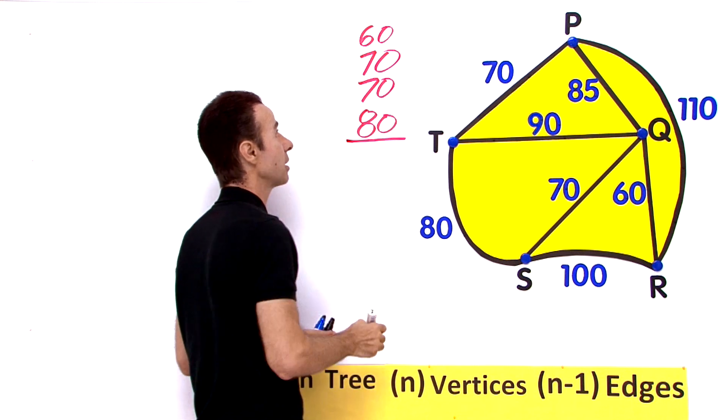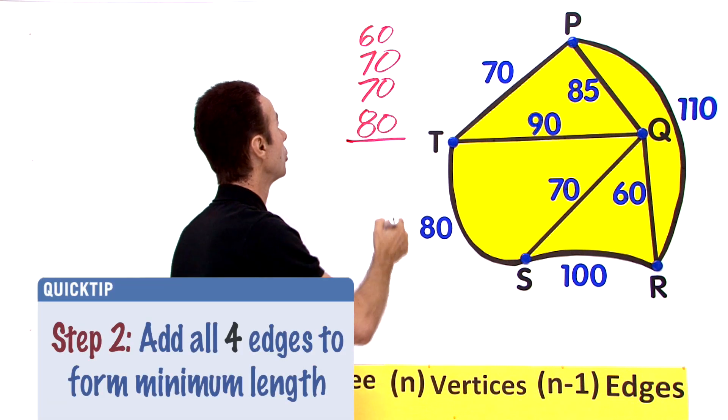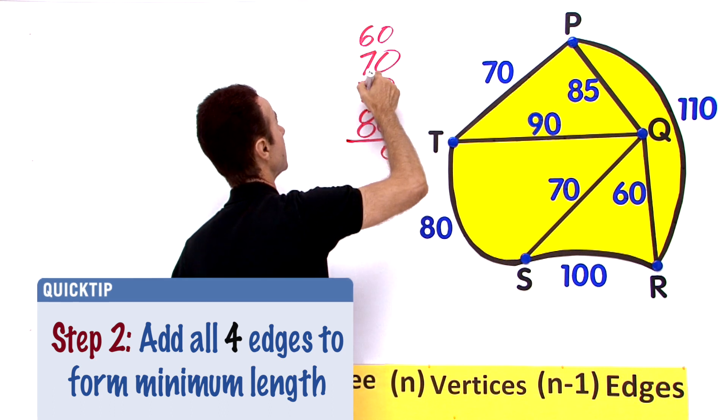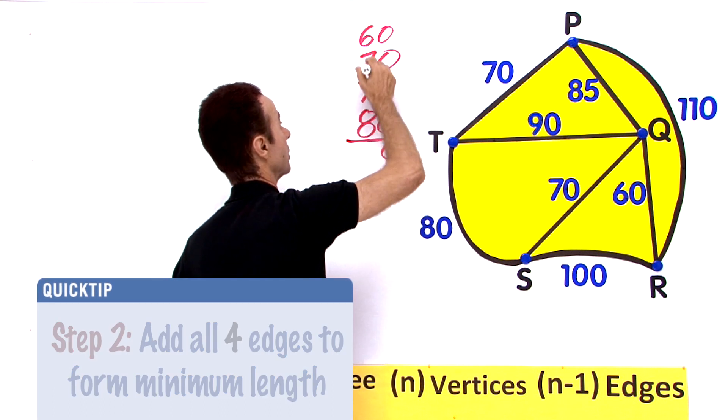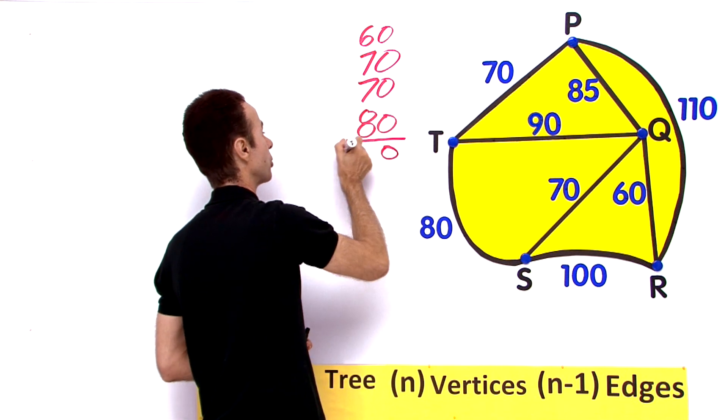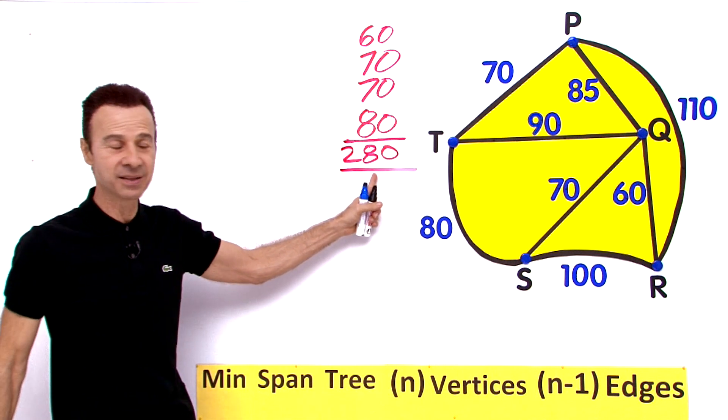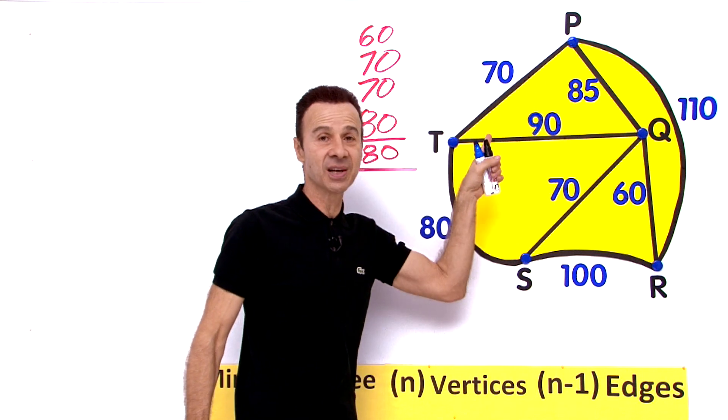So we are looking for that length. If we add them all together we should get 280. So the minimum spanning tree length should be 280 based on these weights on these edges.